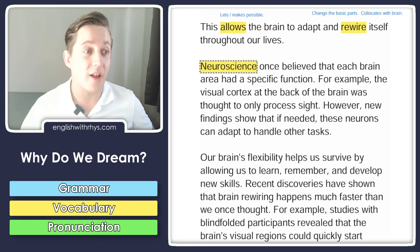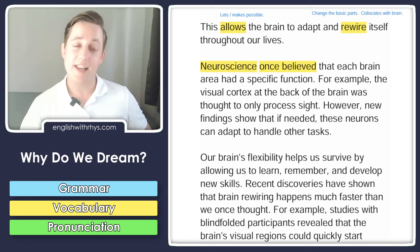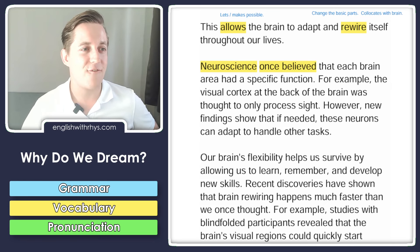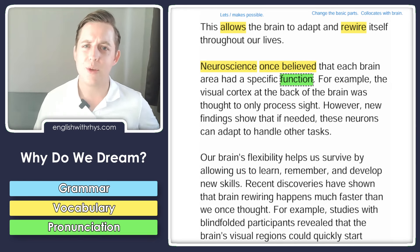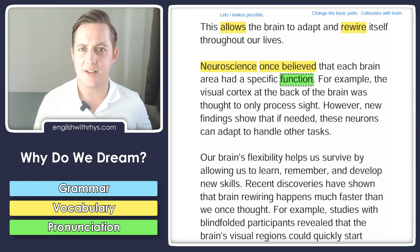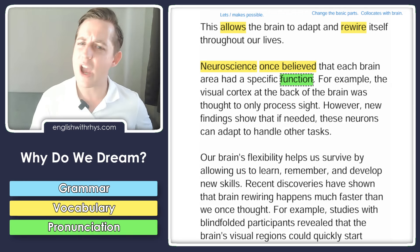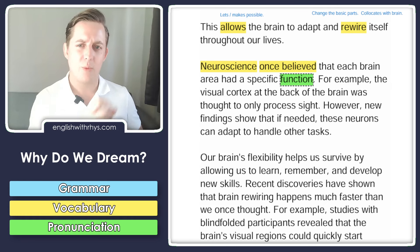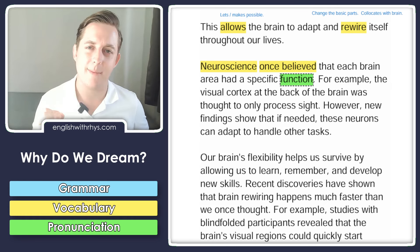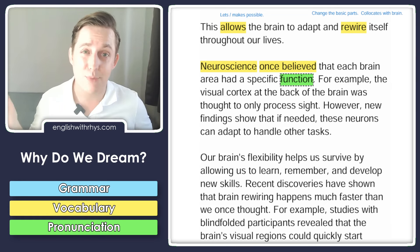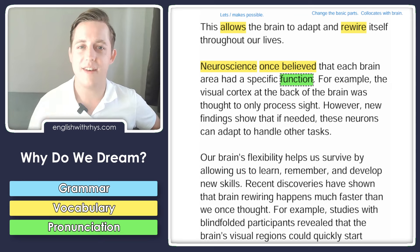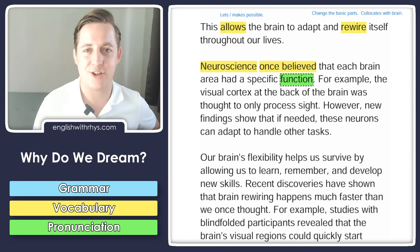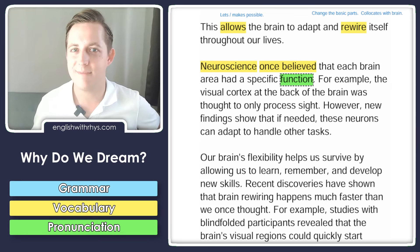Neuroscience once believed that each brain area had a specific function. A function is like a job. And check out the pronunciation: function. There's a T and an I-O-N — it's a little strange. We take that from French and use it all the time in English. When you see T-I-O-N, it's pretty much always pronounced '-tion.' Function. Communication. Location. Can you think of any more?